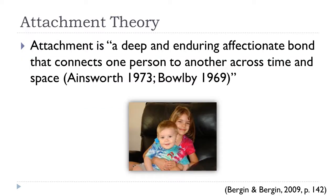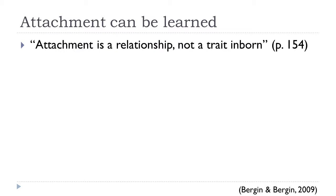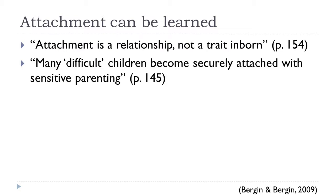In attachment theory, attachment is defined as a deep and enduring affectionate bond that connects one person to another across time and space. Attachment focuses on a bond between two people. It's worth noting that attachment can be learned — attachment is a relationship, not a trait that you were born with. This is shown by the fact that many difficult children become securely attached with sensitive parenting. Attachment theorists also believe that attachment is relatively stable over time.